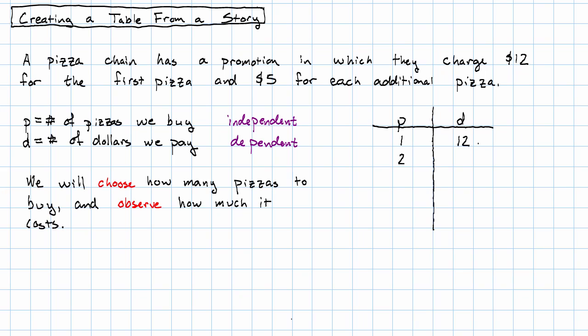So if we buy a second pizza, we'll add $5 to what we paid before. We pay $17. If we buy a third pizza, we add another $5, now we're up to paying $22. Fourth pizza, we add another $5, we're up to paying $27.